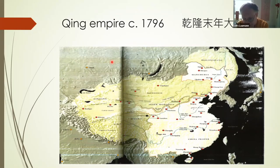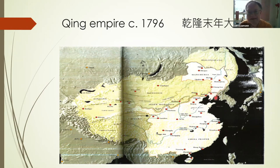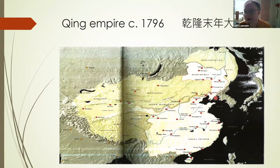Nurhachi is first of all an official in the service of the Ming dynasty, active in Shenyang — Shenjing — as illustrated on this map. This is very important because he actually learns how the Ming dynasty operates. Why is this important? Because it shows that the Manchus from the very beginning, the Qing dynasty from the very beginning, were heavily influenced in civilizational terms by China.